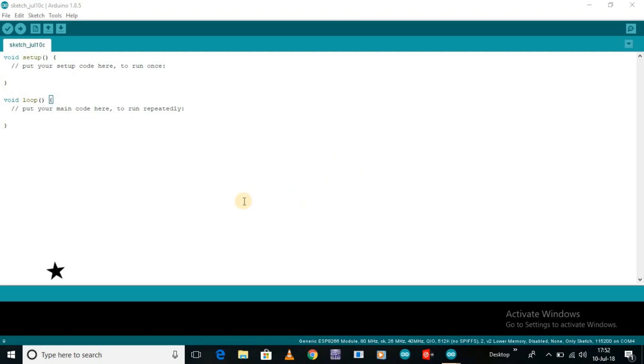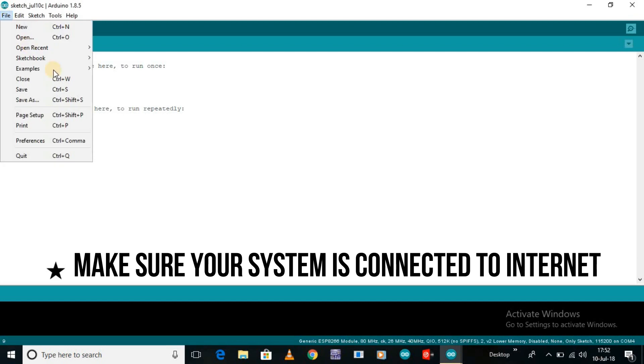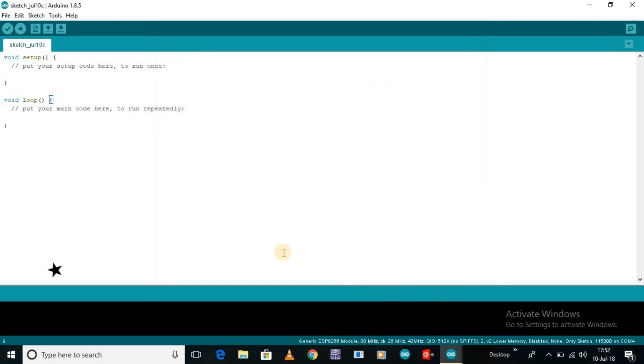First, go to File, then Preferences in the Arduino IDE. In the Additional Board Manager URL section, paste this URL copied from description, and then click OK.